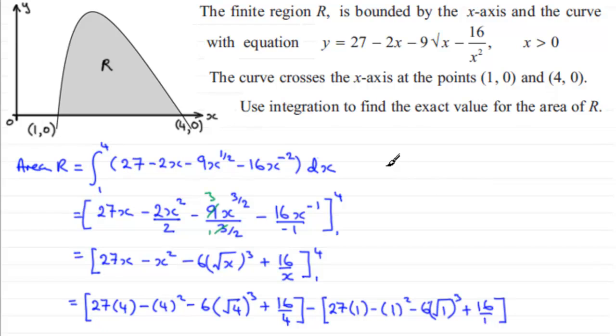Okay, now if you work this out, you've therefore got the area R equals, and this first bracket comes to 48, and the second bracket here comes to 36.